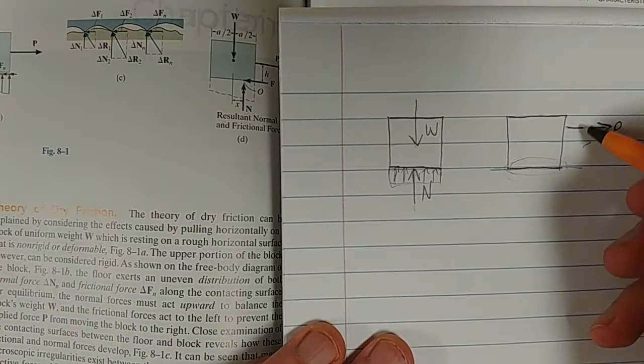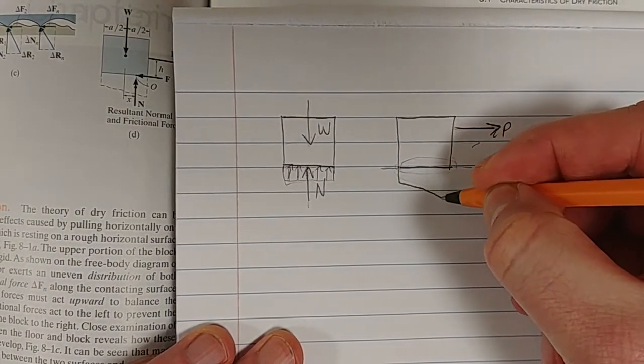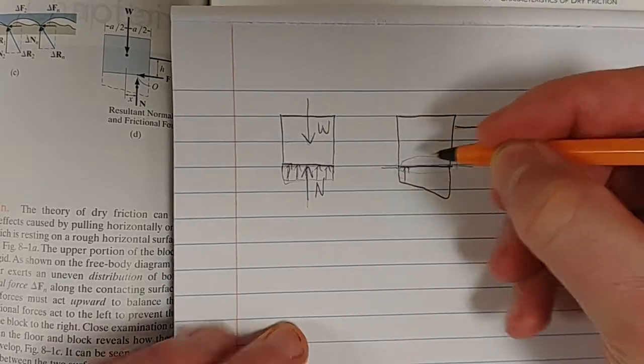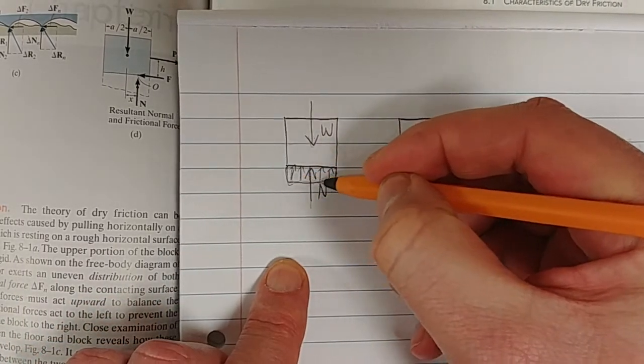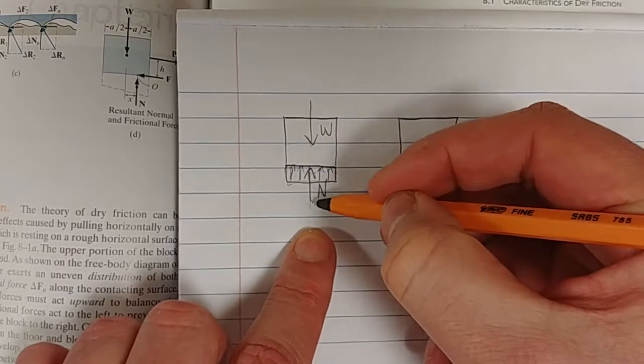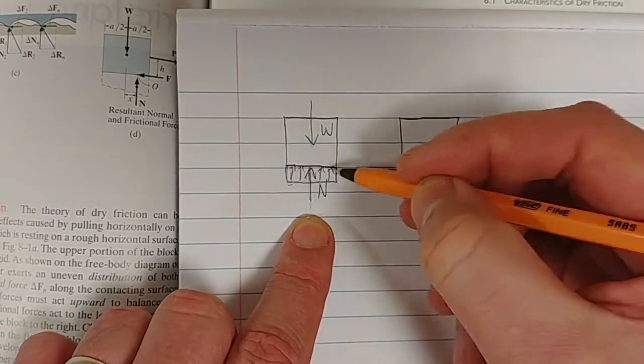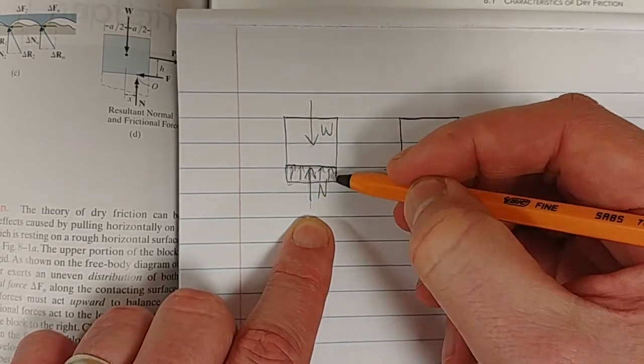So, as we begin to apply this force here, and I want you to take note of it, the normal force that was a constant distribution like this, and then we just obtain the resultant normal force by calculating the area under the curve and finding the geometric center.